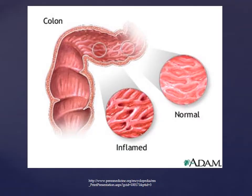In this figure, we have a picture of the colon with representations of an inflamed site and a normal site. As you can see, the inflamed area is a darker red color, and that is the area we're going to be looking at.